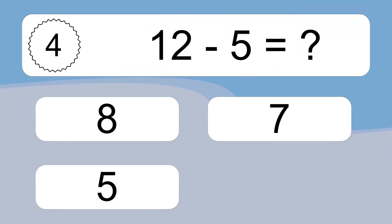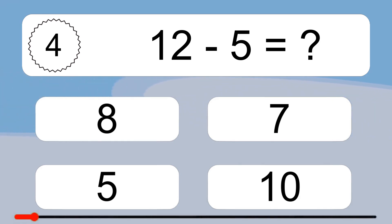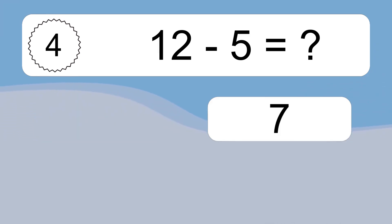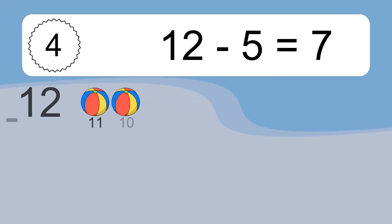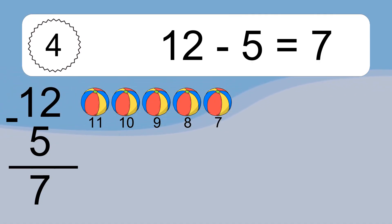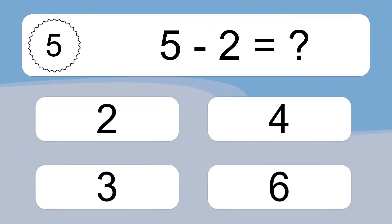Twelve minus five equals what? Twelve minus five equals seven. Let's count it: 11, 10, 9, 8, 7.